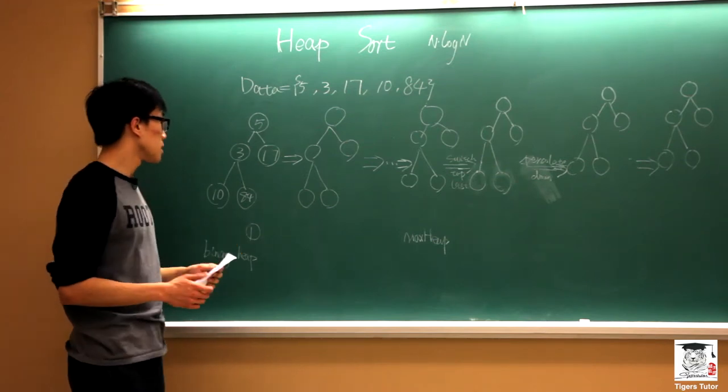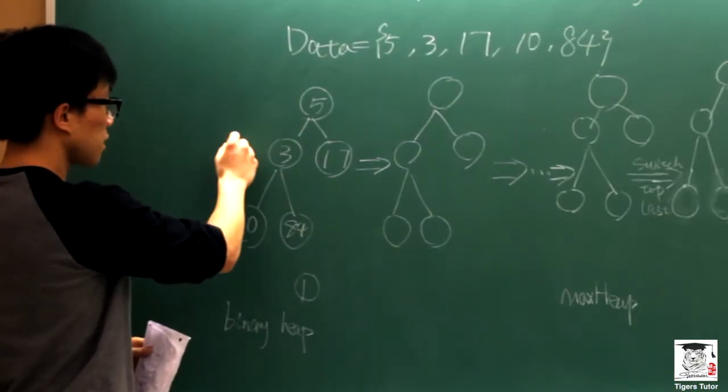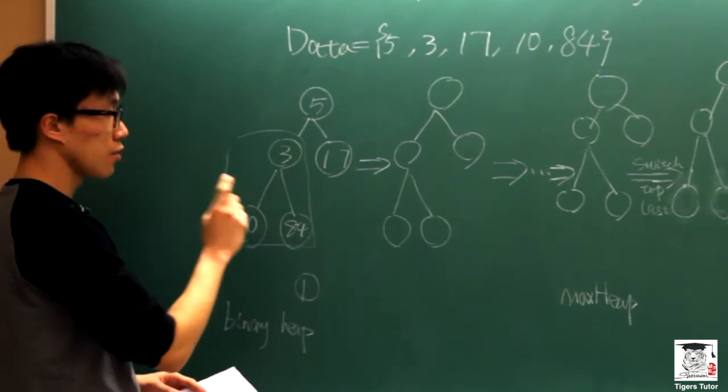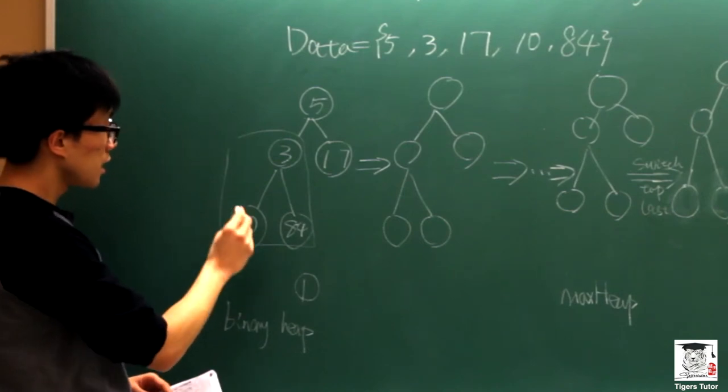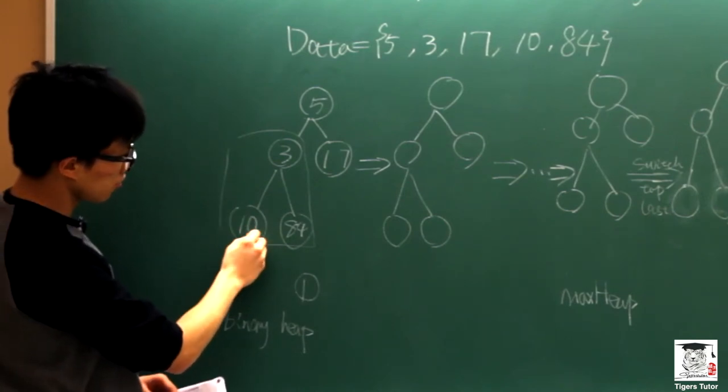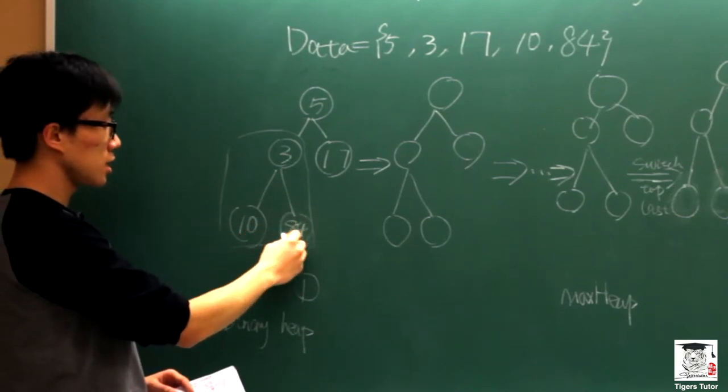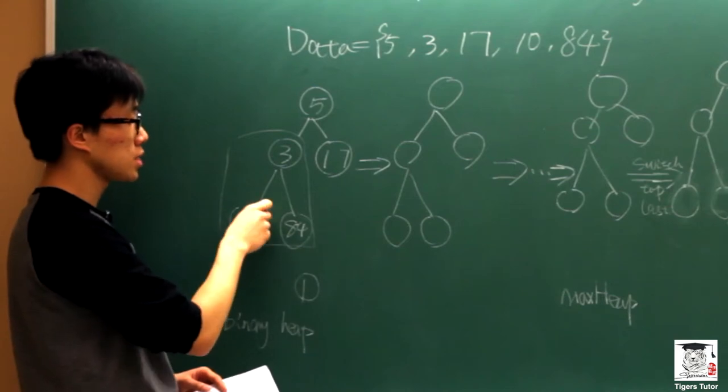So as we can see here, we start from the bottom. From this section, we first compare the two children. So 84 is greater than 10. So this is the larger child. And then we compare the larger child with its parent.